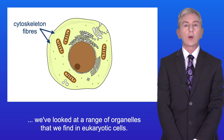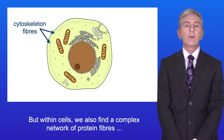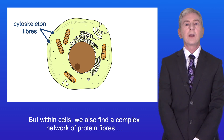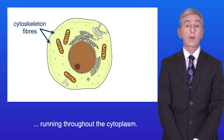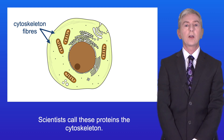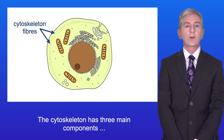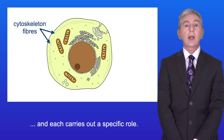So far on this topic we've looked at a range of organelles that we find in eukaryotic cells. But within cells we also find a complex network of protein fibers running throughout the cytoplasm, and scientists call these proteins the cytoskeleton. The cytoskeleton has three main components and each carries out a specific role.